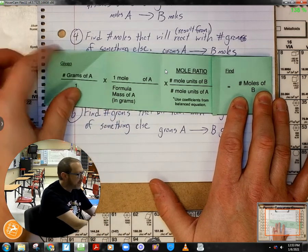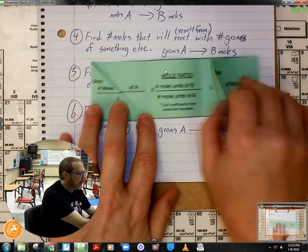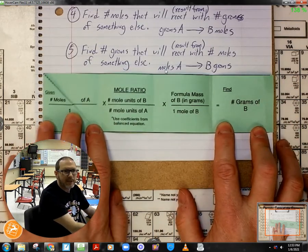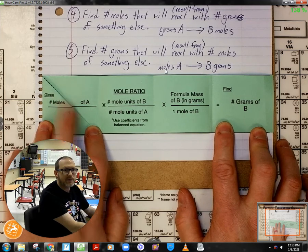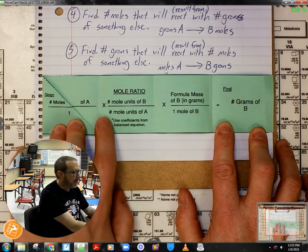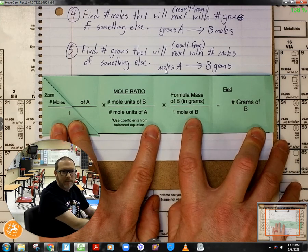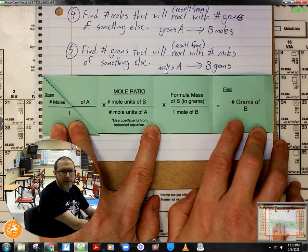In a similar fashion, if I'm given moles of A and I'm trying to find grams of substance B, then I simply fold it like this. I start with moles of A over 1, multiply by mole ratio, and I'm going to multiply by the molar mass of B over one mole of B to find grams.